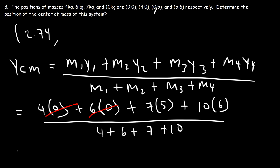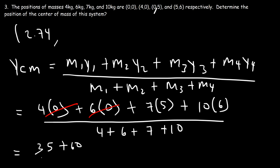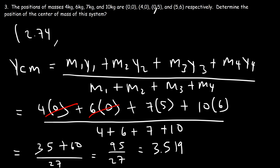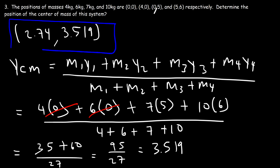So we have 7 times 5 which is 35, and 10 times 6 is 60, with a denominator of 27. Adding 35 plus 60 gives 95, so 95 divided by 27 is about 3.52. That's the y-coordinate of the center of mass. So that's it for this problem.